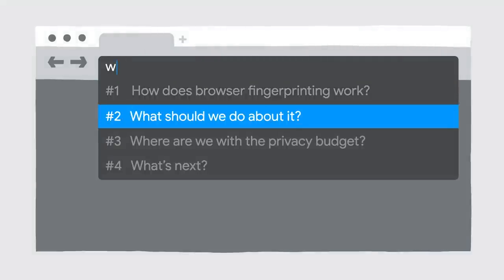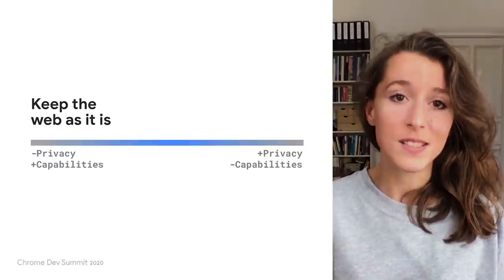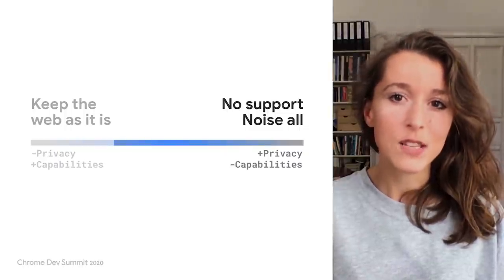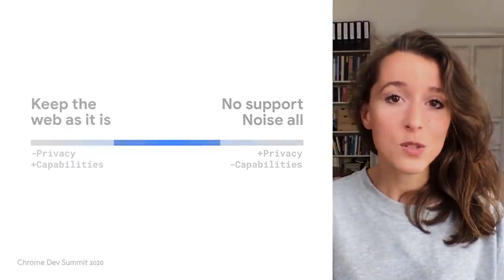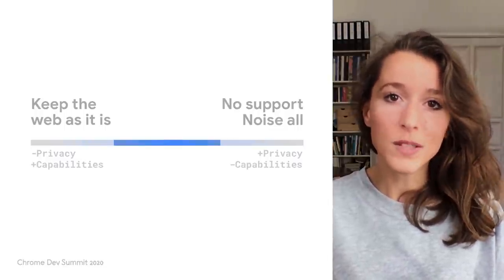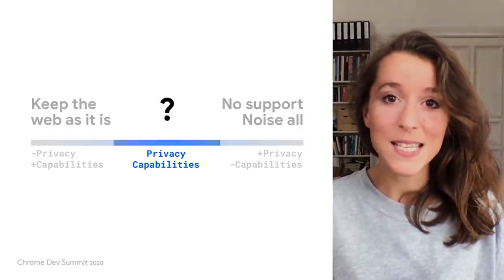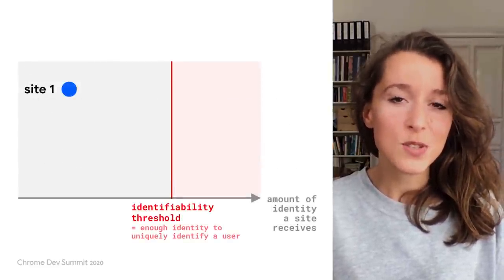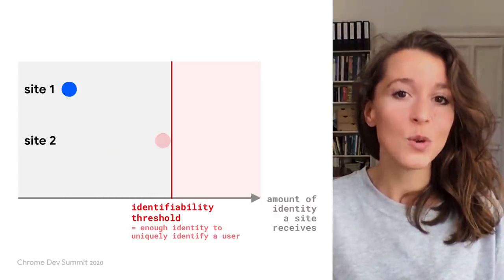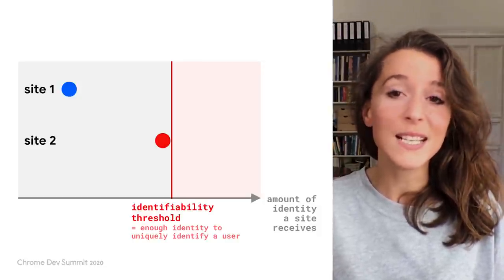So what do we do about this? Web APIs like Canvas, local fonts, and others unlock great capabilities, but can hurt user privacy. So keeping the web as it is, is not an option. We could remove support for highly identifying APIs or not implement support for new APIs. Or we could add noise to all API outputs, but this risks hurting the ability to build amazing web experiences, including for sites that have no intent of identifying users. What if there was a middle ground — a way to get both capabilities and privacy? What if sites could continue using powerful APIs normally? But if a site uses too many highly identifying APIs, the browser could impose limitations to prevent the site from entering the red zone where it could uniquely identify users.